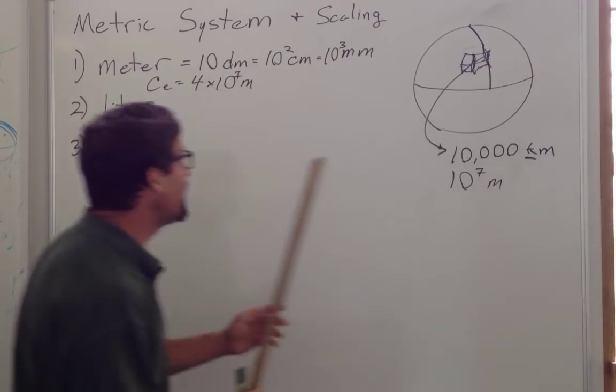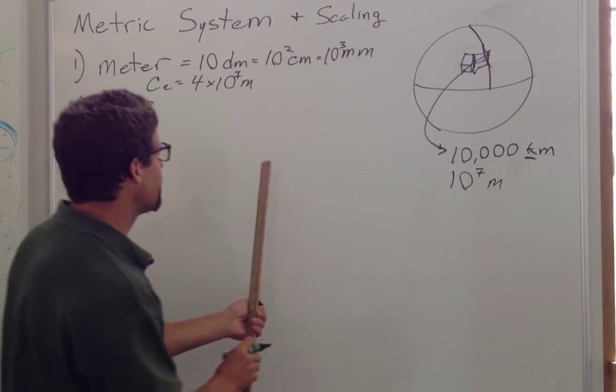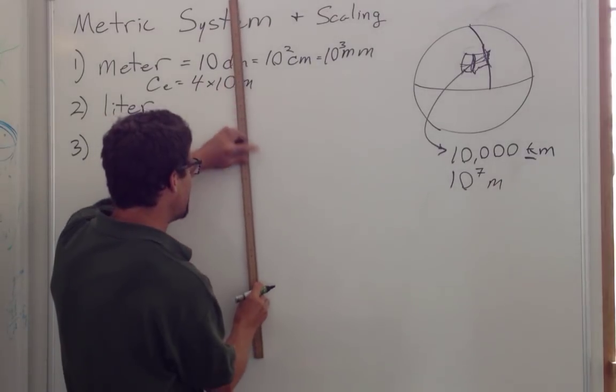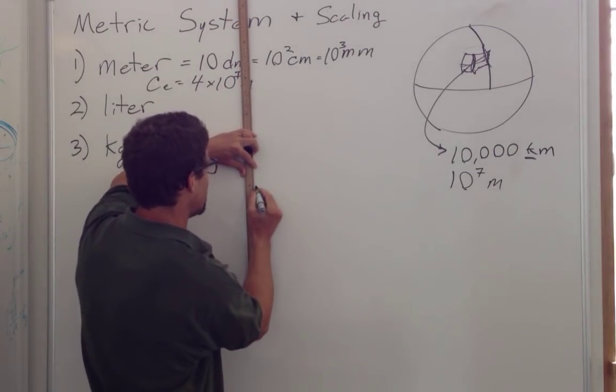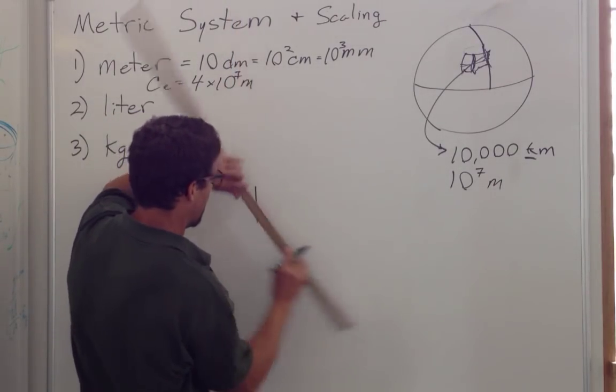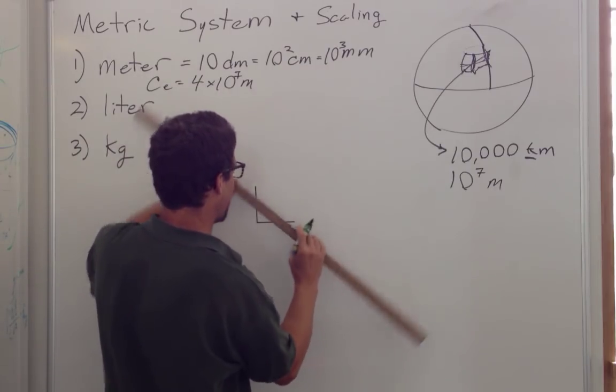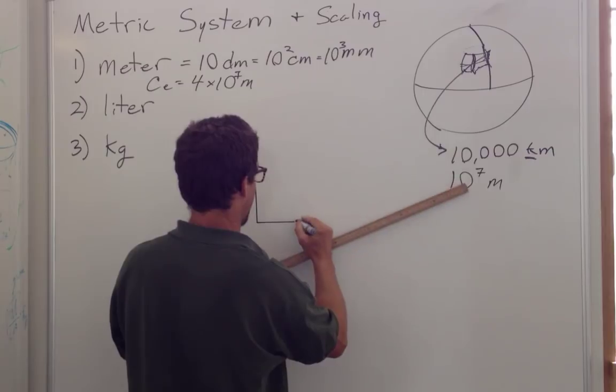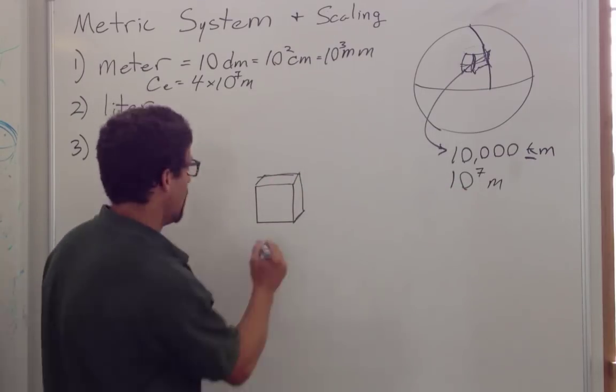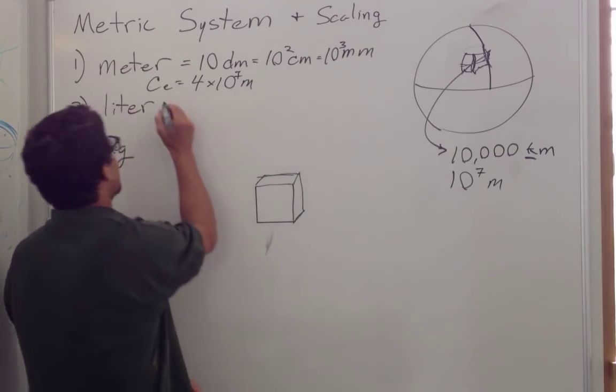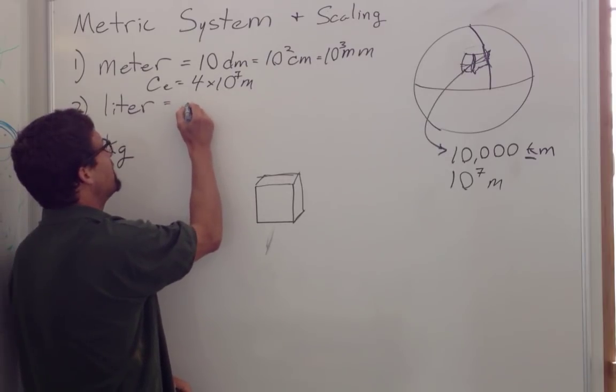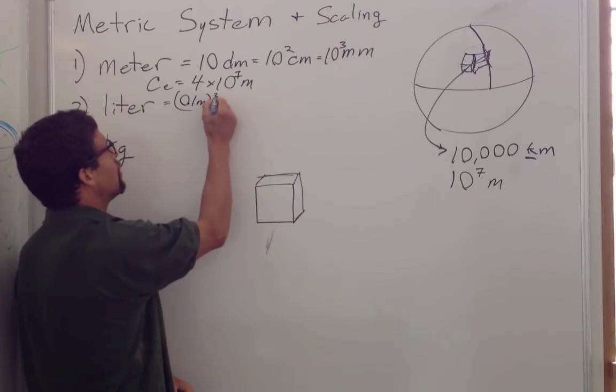Volume. So what is a liter? A liter is a cubic decimeter. So we take a decimeter, one tenth of a meter, in height, in width, and in depth, and we have a liter. So one liter is equal to one decimeter, 0.1 meters cubed.